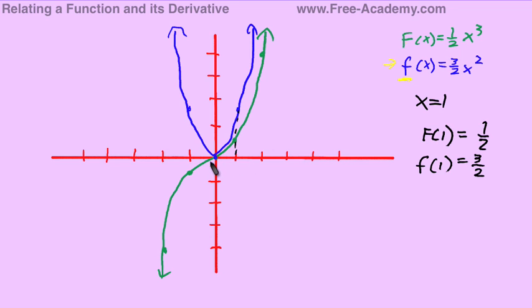So it should follow here that if we draw a line tangent to our original function, that for every 2 it goes over, it should go up 3. Or it should go over 3 for every 2 it goes up. So 1, 2, 3, 1, 2. That would be our tangent line, about like that.